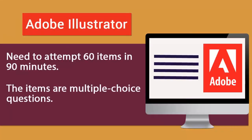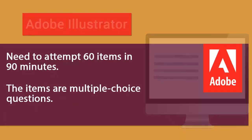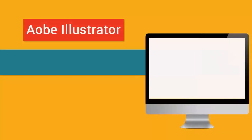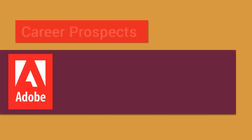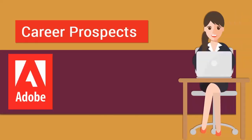For the Adobe Illustrator exam, you'll need to attempt 60 items in 90 minutes. The items are multiple choice questions. To pass the Adobe Illustrator exam, you'll need to score 300 out of 700.